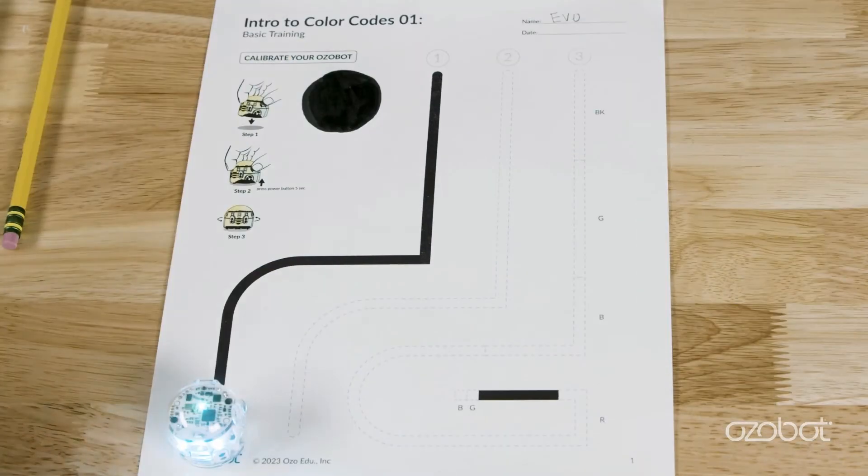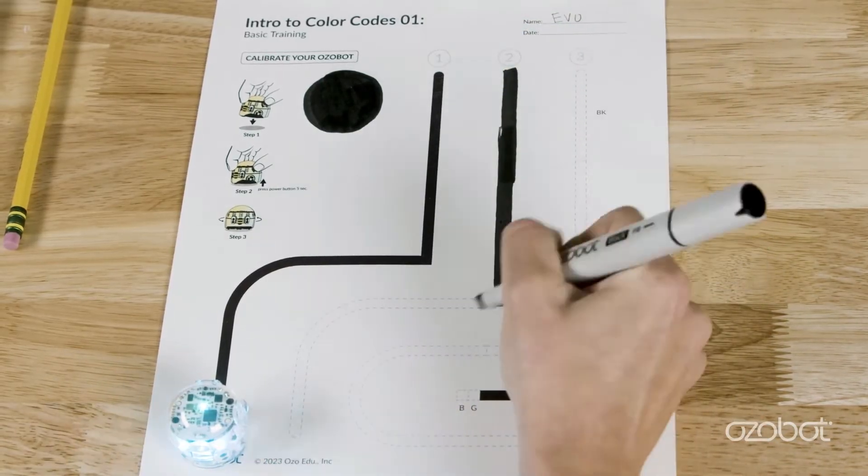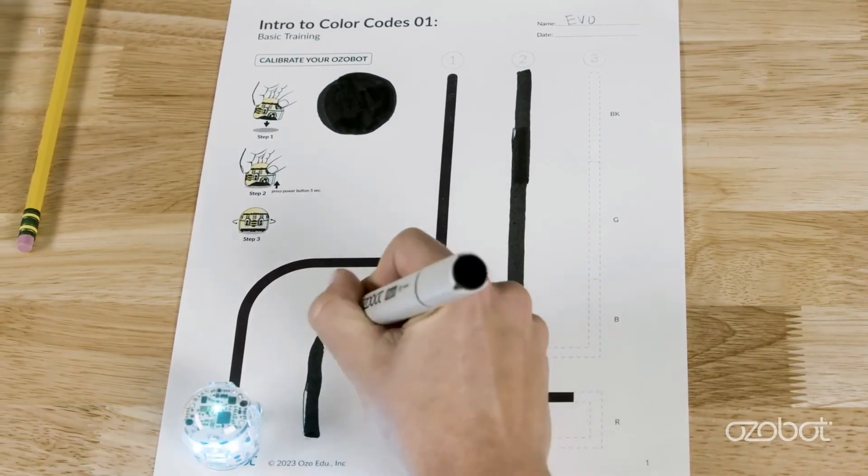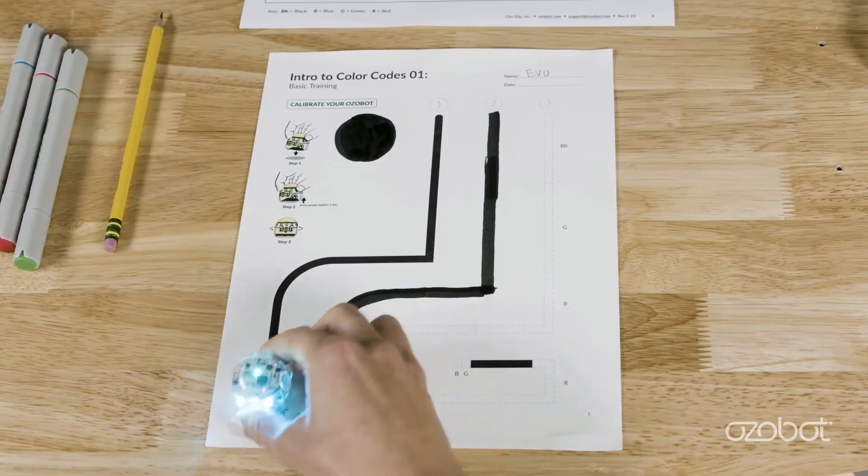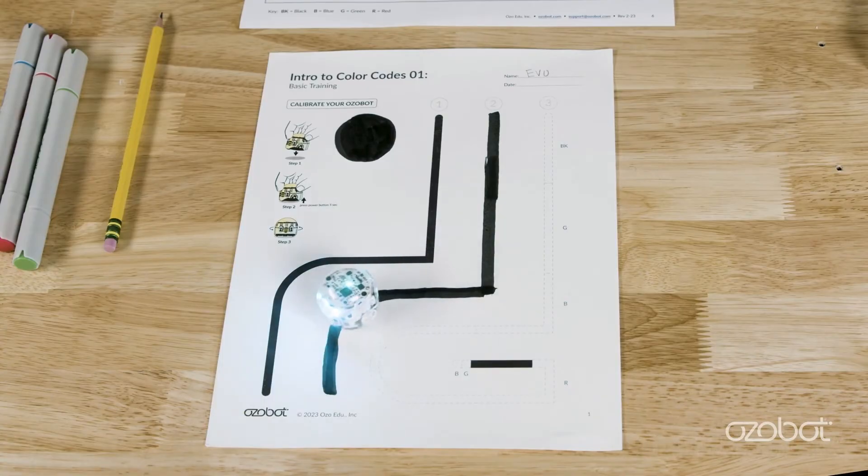Next, fill in the line beginning at start two with black marker. There are guidelines to help you know how wide the line should be. Place Ozobot on start two and watch as it travels along the straight line, the corner, and the curve. A hint about corners: a 90-degree corner or square corner is Ozobot's favorite. If a corner is less than that, Ozobot might have trouble continuing on the line.